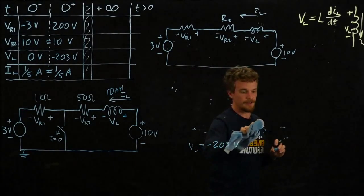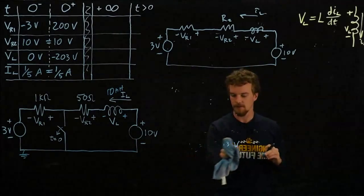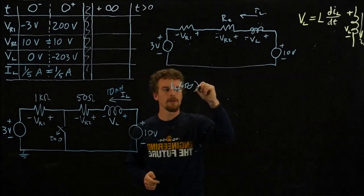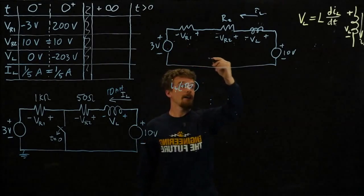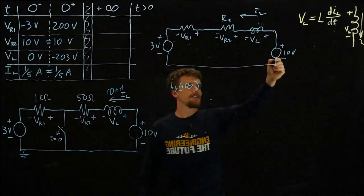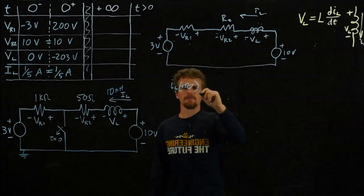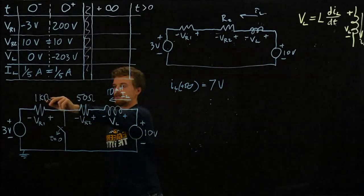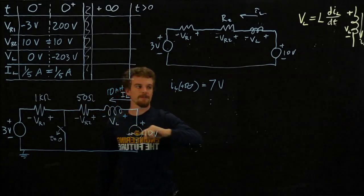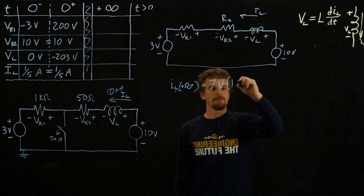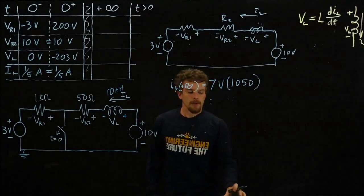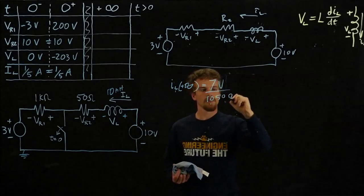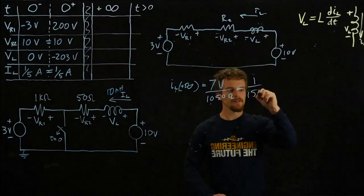The total current equals the total voltage over the total resistance. I_L at positive infinity would be equal to—what's the total voltage? We have a 10 volt rise and then a 10 volt rise and then a 3 volt drop, so that's 7 volts. What's the total resistance? We have 1 kiloohm and 50 ohms. That equals 1,050 ohms. This is supposed to go in the denominator: 7 volts over 1,050. That equals one over 150 amps.